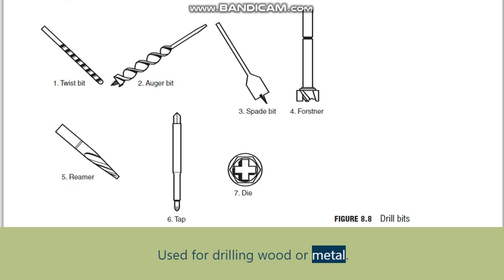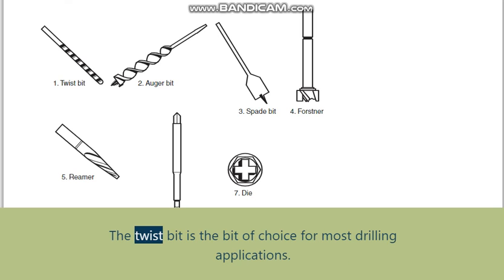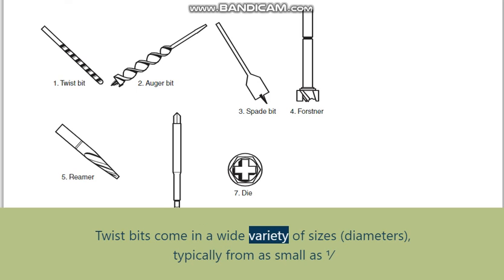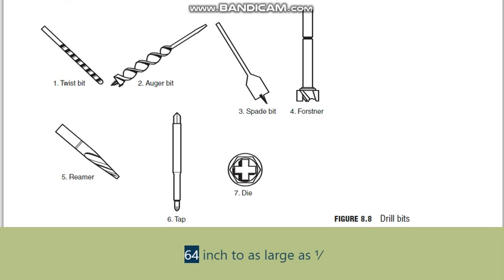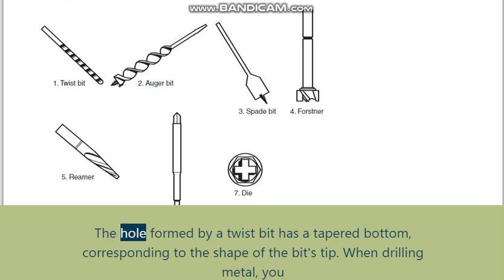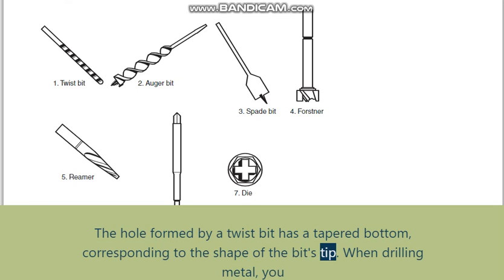Twist bit: used for drilling wood or metal. The twist bit is the bit of choice for most drilling applications. Twist bits come in a wide variety of sizes, with diameters typically ranging from as small as 1/64 inch to as large as 1/2 inch.